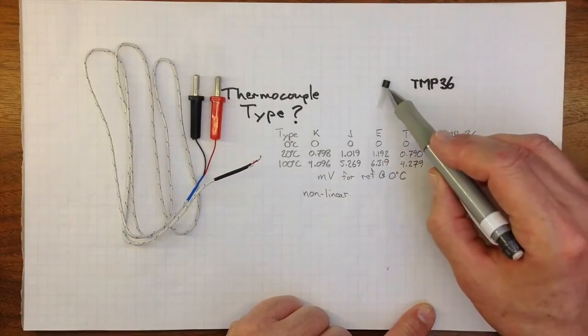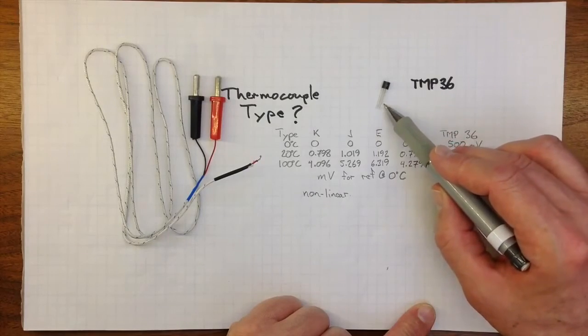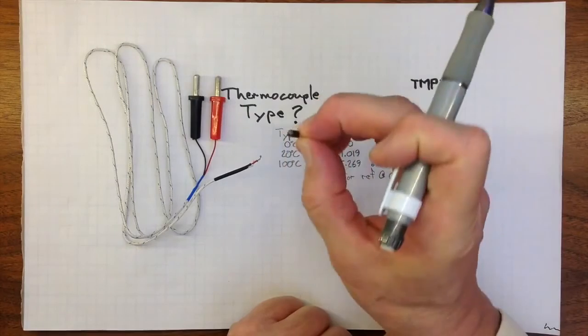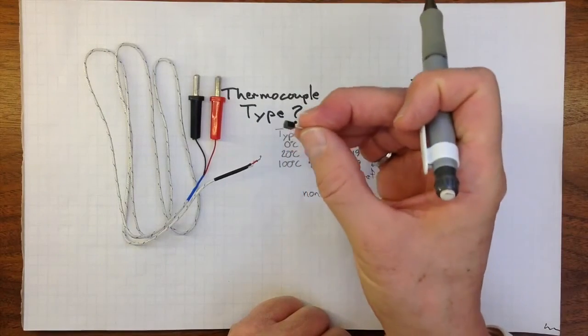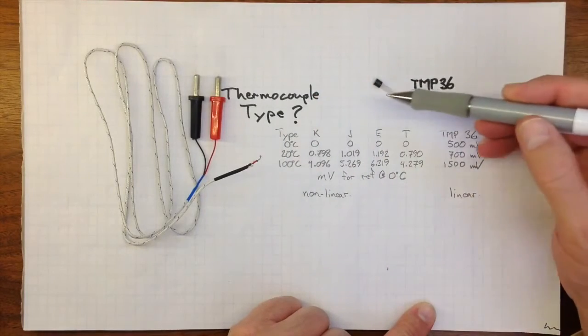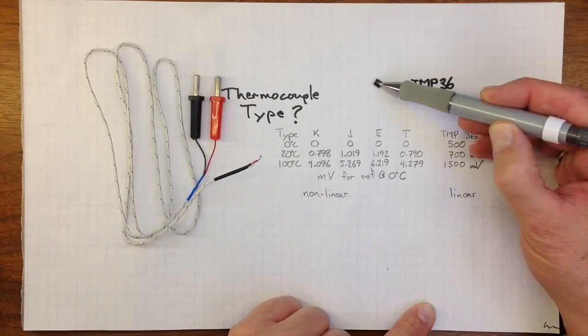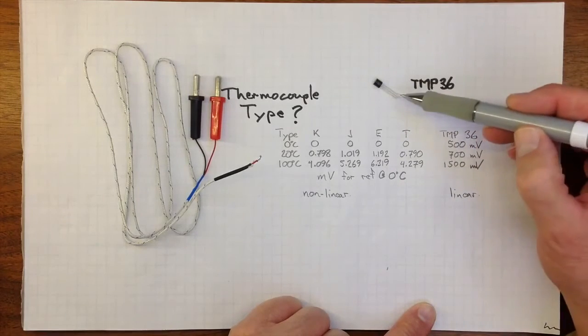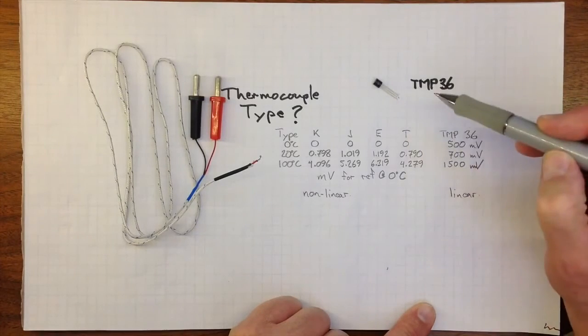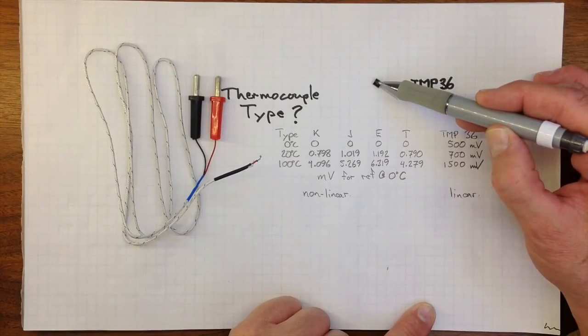The other transducer we're going to use is one of these TMP-36 integrated circuit transducers, and it's just a little black box encapsulated in plastic. Inside there is probably a thermistor and some linearization circuitry, and the result is that if we apply power to these two leads on the outside, then from the middle lead, we can get a signal that will vary linearly with temperature.